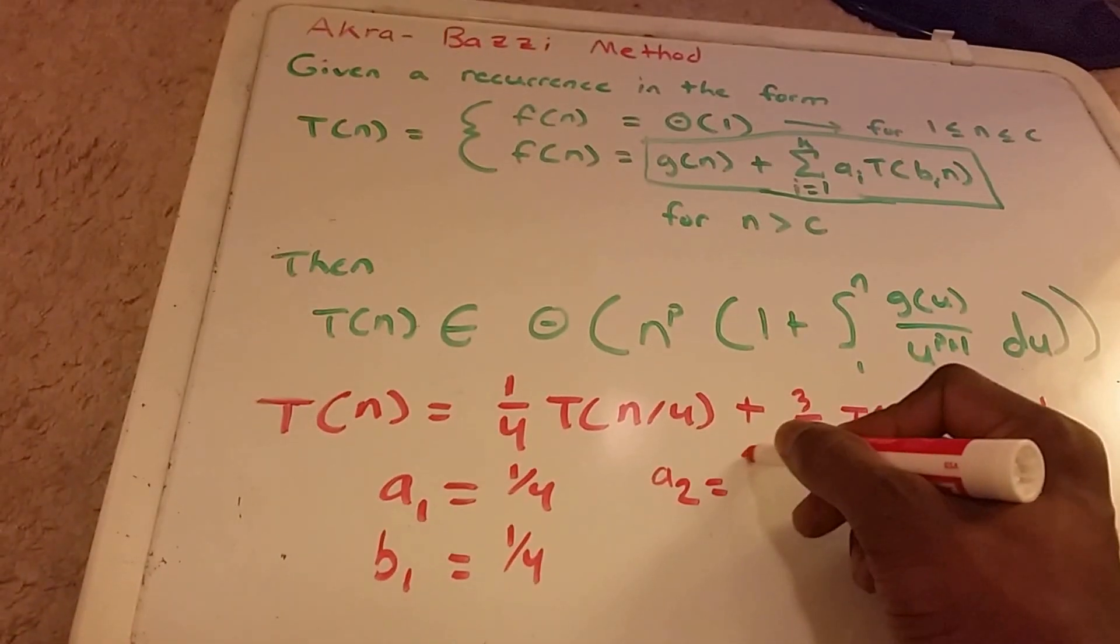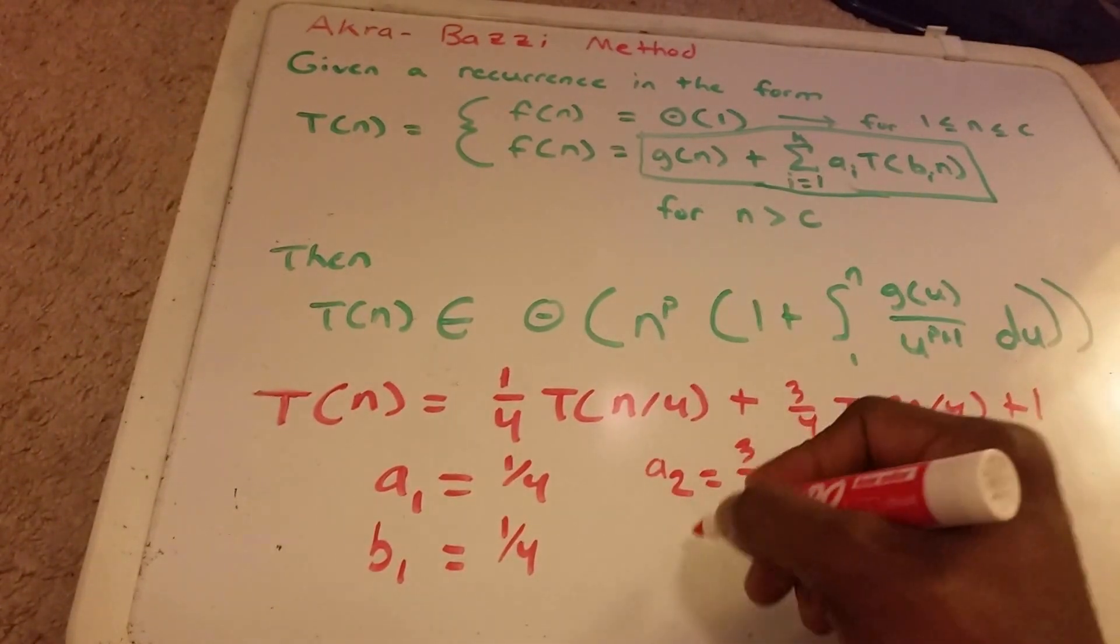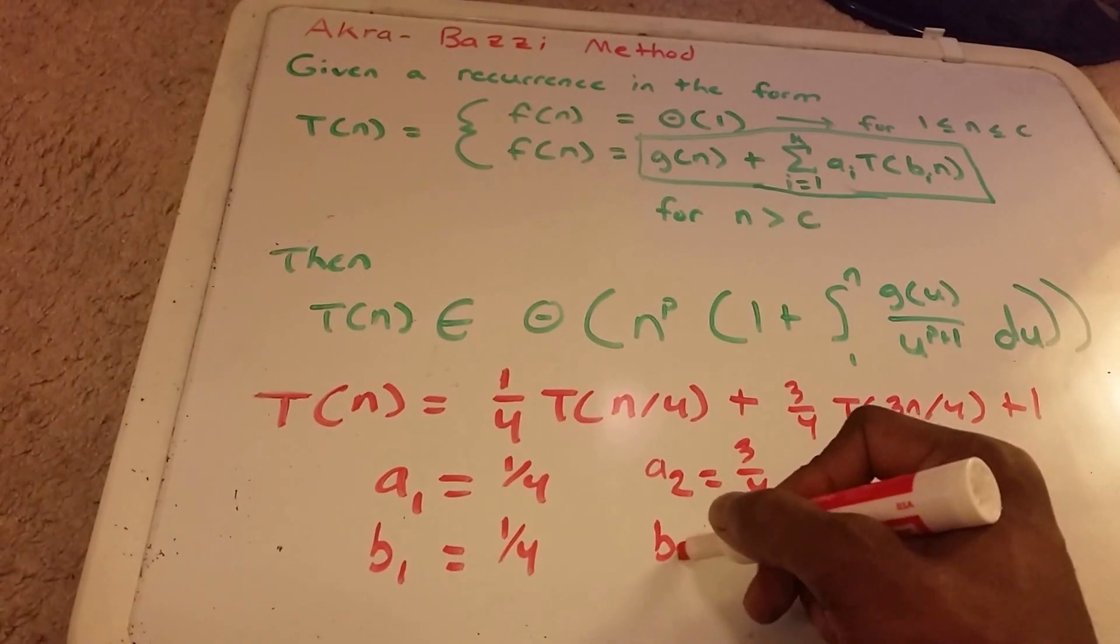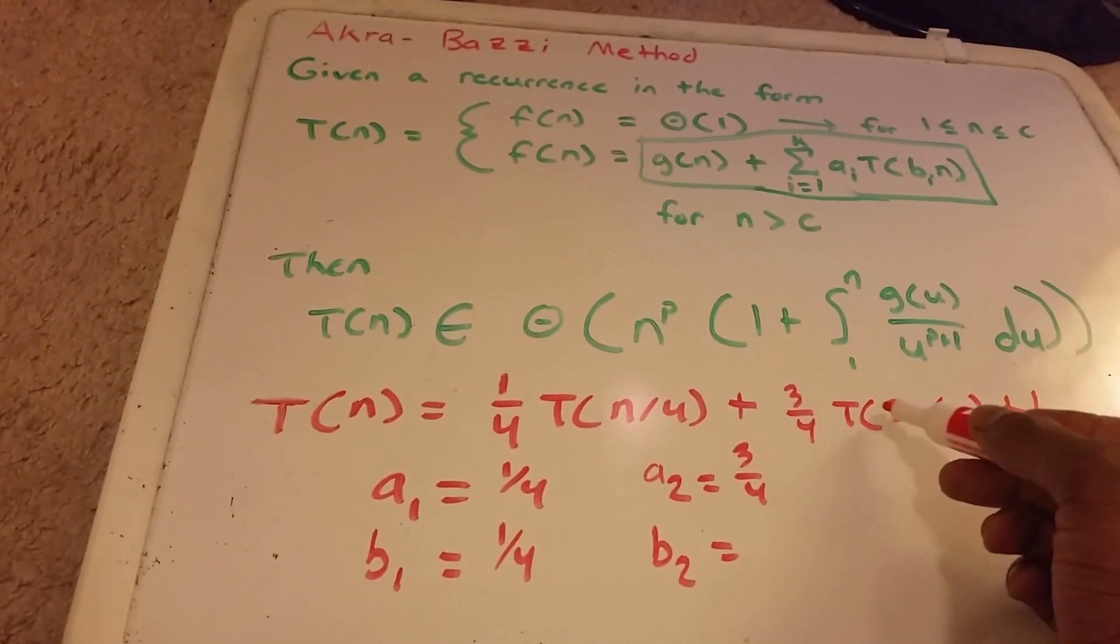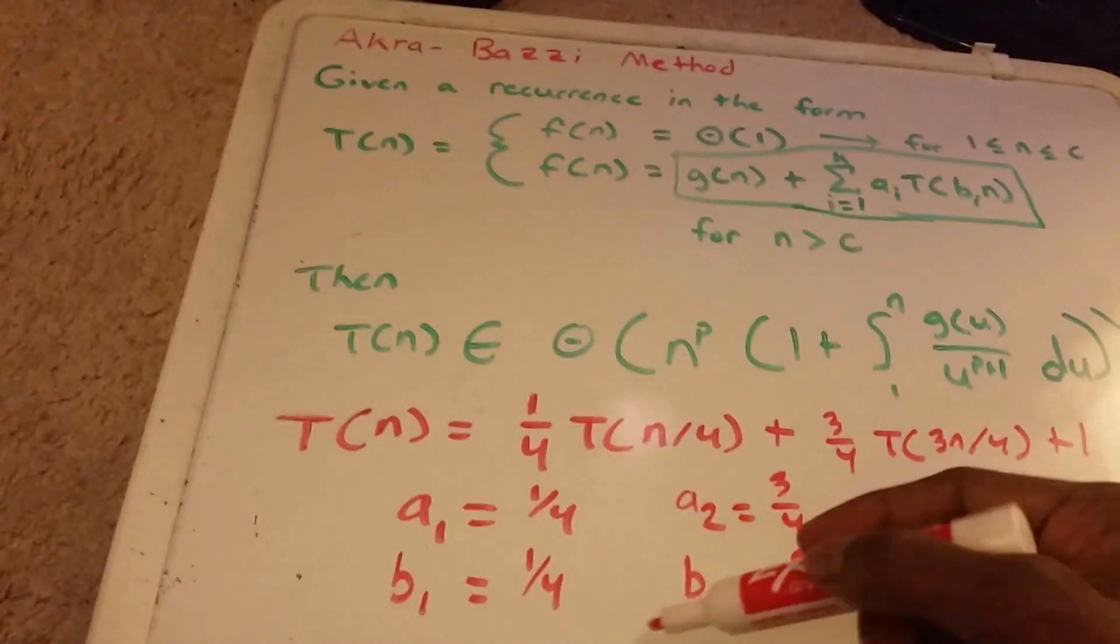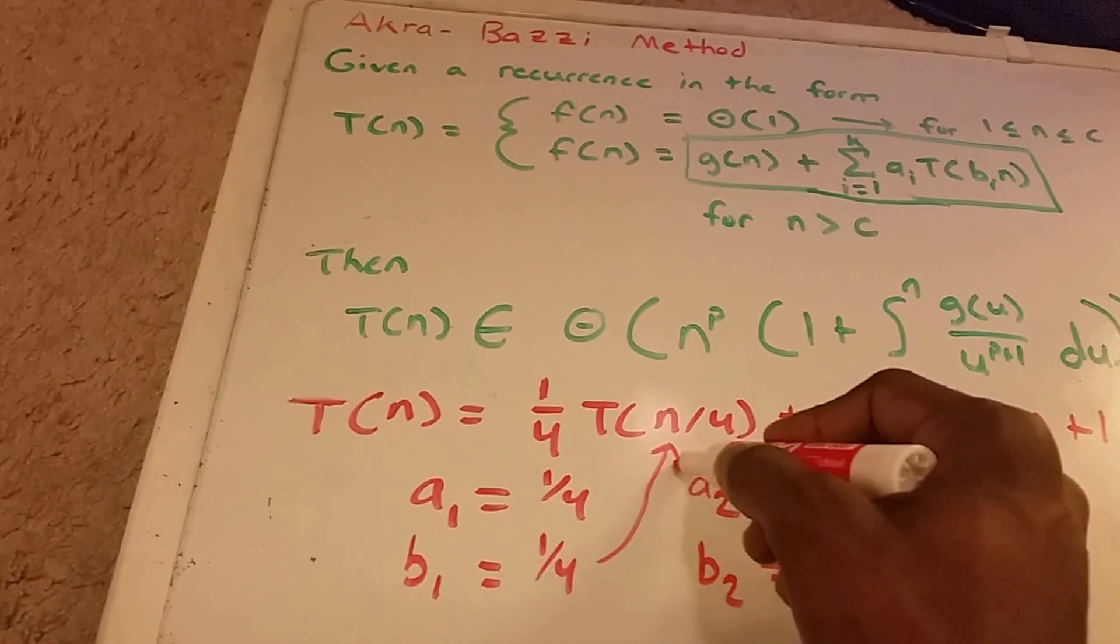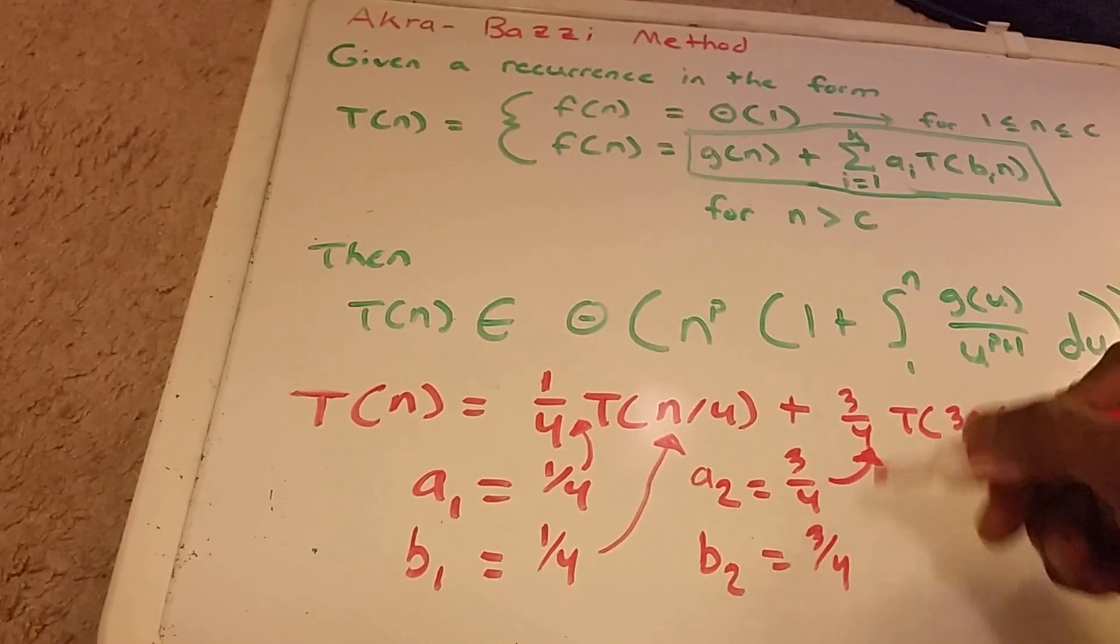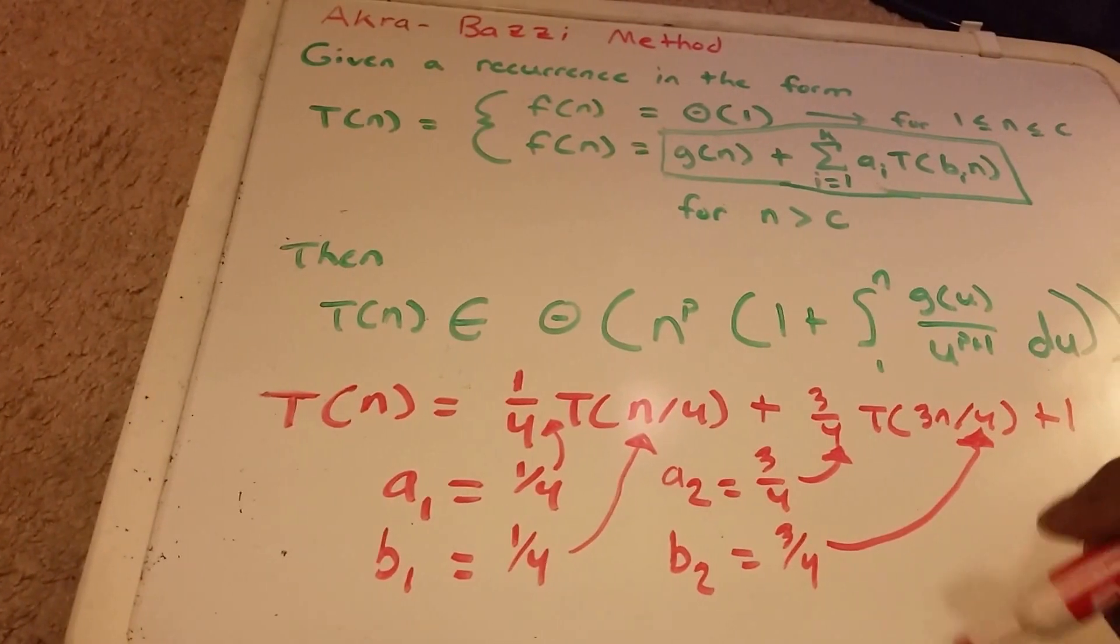is equal to 3 fourths. I didn't do a good job of choosing a better example. But our b subscript 2 also equals 3 fourths. That's our 3 fourths times n. So although the numbers look the same, these are different values. I'm getting this b subscript 1 from here and the a from here. And I'm getting this 3 fourths a from here and this 3 fourths from here.